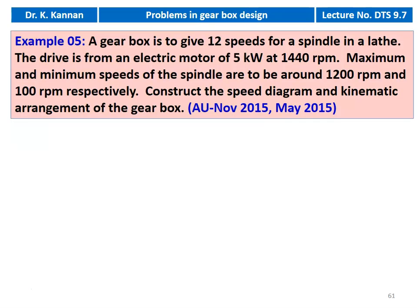Example number 5. A gearbox is to give 12 speeds for the spindle of a lathe. The drive is from an electrical motor of 5 kW and 1440 RPM. Maximum and minimum speed of the spindle are to be around 1200 RPM and 100 RPM respectively. Construct the speed diagram and kinematic arrangement of the gearbox. This question was appearing in November 2015 and May 2015.